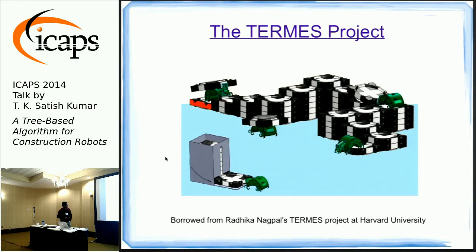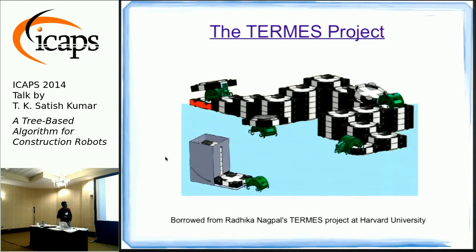They also have a single actuator arm that helps them plug into a block, lift it up, carry it around, and place it in another position. These are the only basic operations the robots perform. They do them so well that uncertainties associated with manipulation or localization are not prevalent in this domain, so one can conceive of them doing high-level task planning without worrying about motion planning errors.